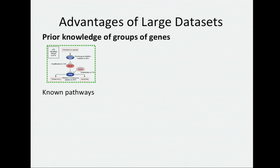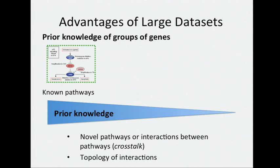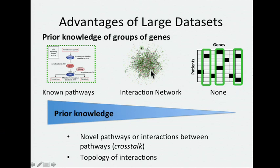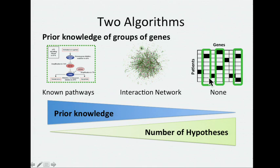As the datasets get larger, my group has been interested in developing ideas that allow us to drill a little deeper into the data, not restrict ourselves to only known pathways, but rather to reduce the amount of prior knowledge we put into the analysis, thereby possibly identifying novel pathways or crosstalk between pathways or perhaps use something about the topology of these interactions. As we reduce the amount of prior knowledge and go to a noisy whole genome interaction network or even try to look at all combinations of genes, we face this statistical problem of increasing number of hypotheses.